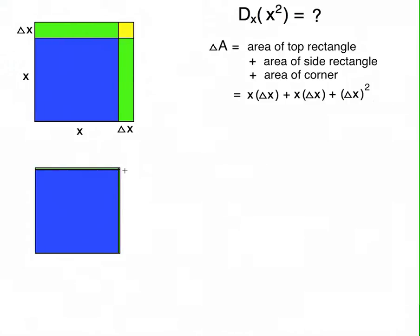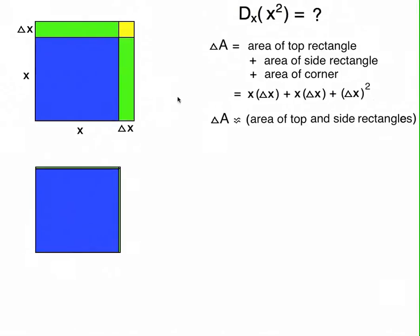The yellow one in the corner, well, you can hardly see it anymore. Now, the point is that as delta x goes to zero, the area is almost entirely made up of the green rectangles, not the yellow rectangle.